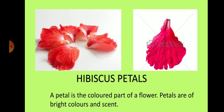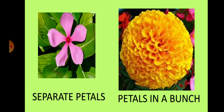Look here at the picture of Hibiscus petals. A petal is a coloured part of a flower. Petals are of bright colours and scent. In some flowers the petals are separate, like the periwinkle flower, whereas in marigold the petals are in bunches.